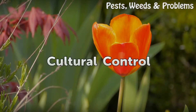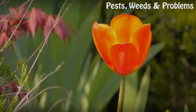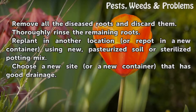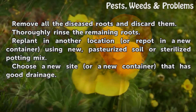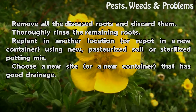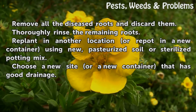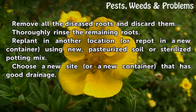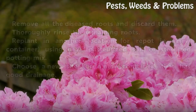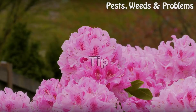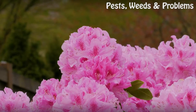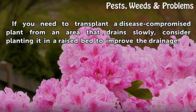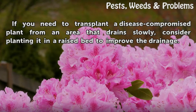Cultural control: remove all the diseased roots and discard them. Thoroughly rinse the remaining roots. Replant in another location or repot in a new container using new pasteurized soil or sterilized potting mix. Choose a new site or a new container that has good drainage. Tip: if you need to transplant a disease-compromised plant from an area that drains slowly, consider planting it in a raised bed to improve the drainage.